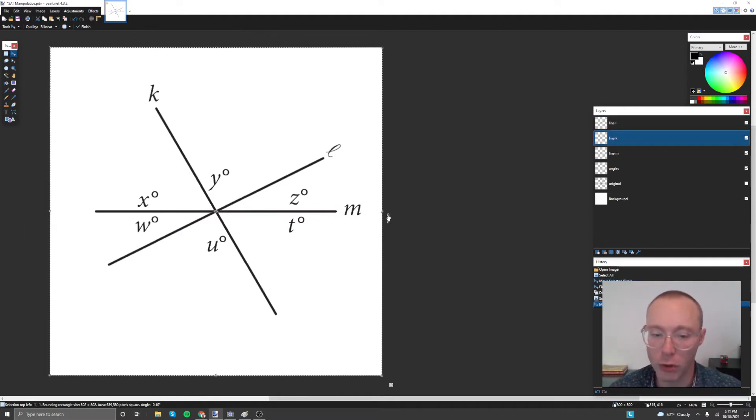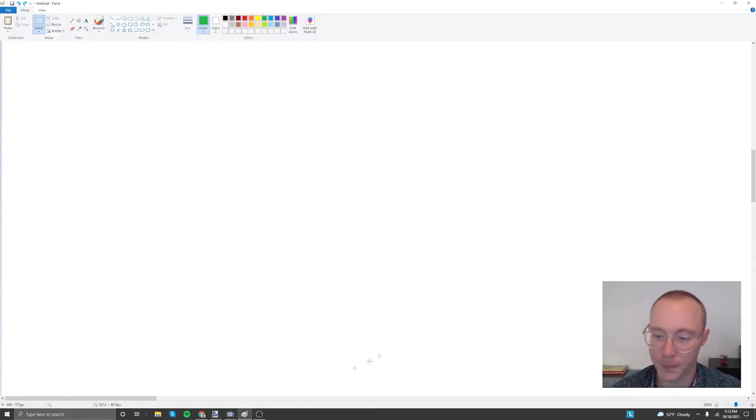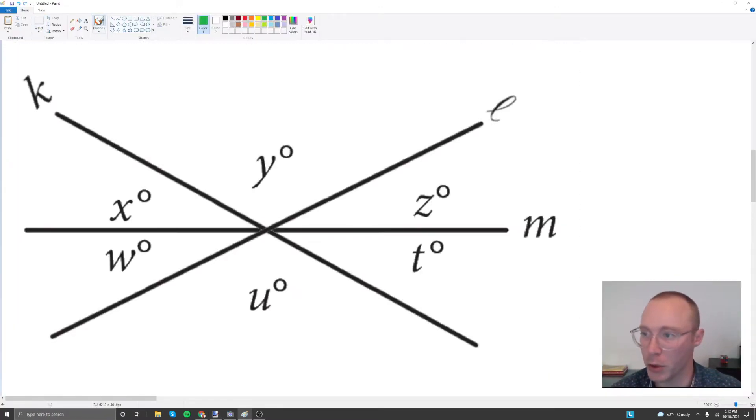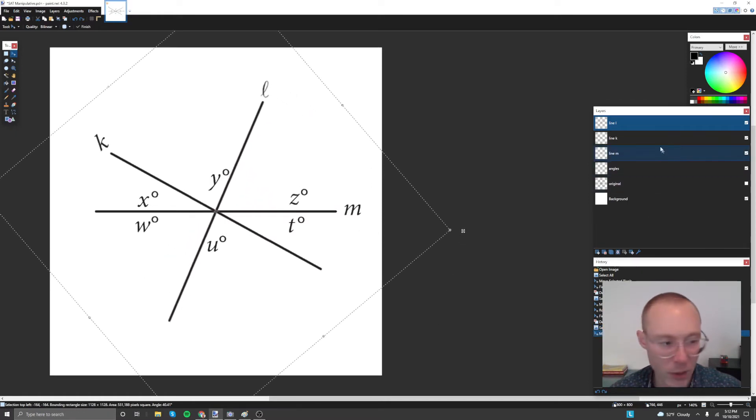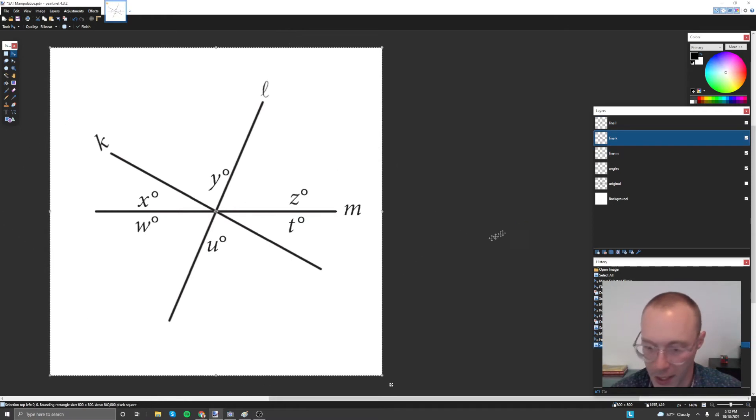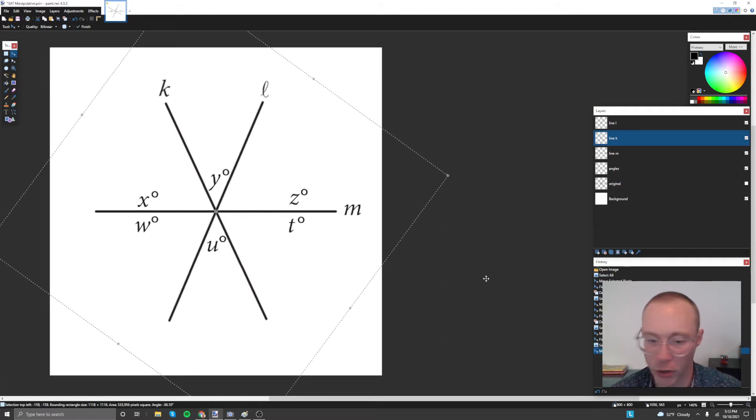But if we go ahead and alter line k in exactly the same way that we're altering line l, we can see that the initial conditions will remain true. I'm demonstrating that by showing you that here we have angle x plus angle y congruent still to angle u plus angle w. We can also alter line l so that it goes further away from line m, and if we do the same thing to k, we'll again see that the initial conditions hold.